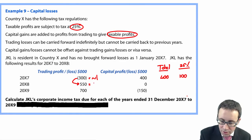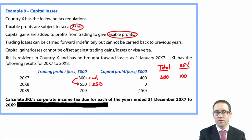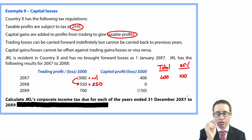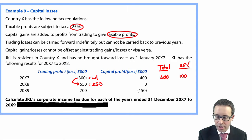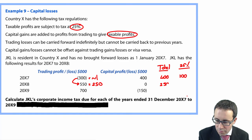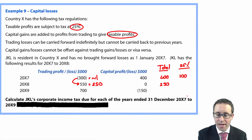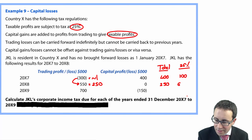In X8, after utilising the 300 trading loss from the previous year, you have 250 remaining trading profit with no capital gain. At 25%, the tax is 62.5.